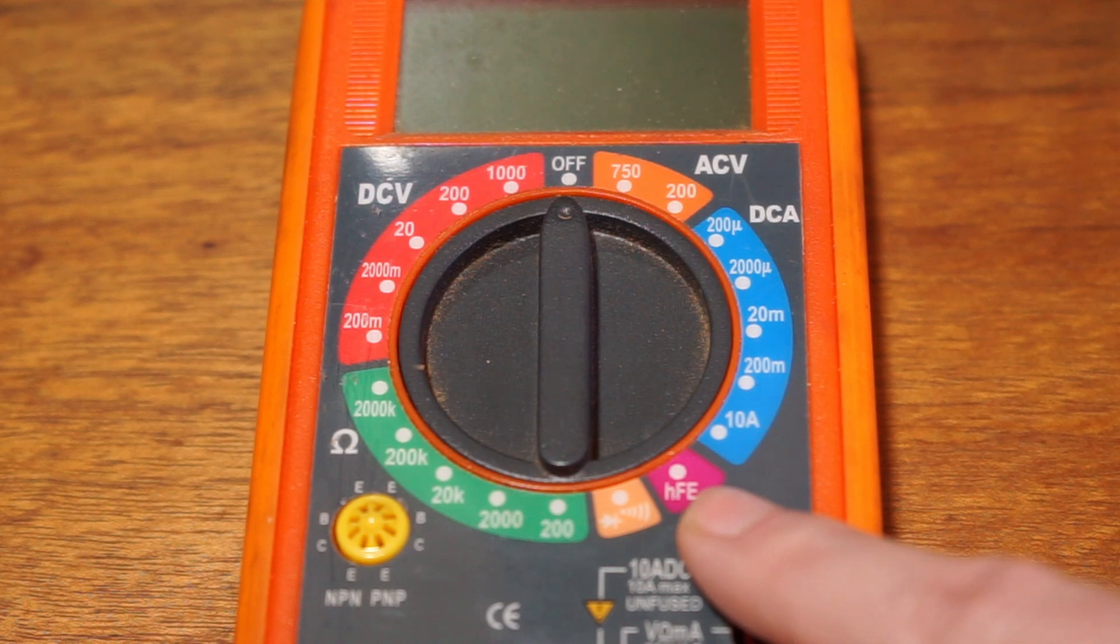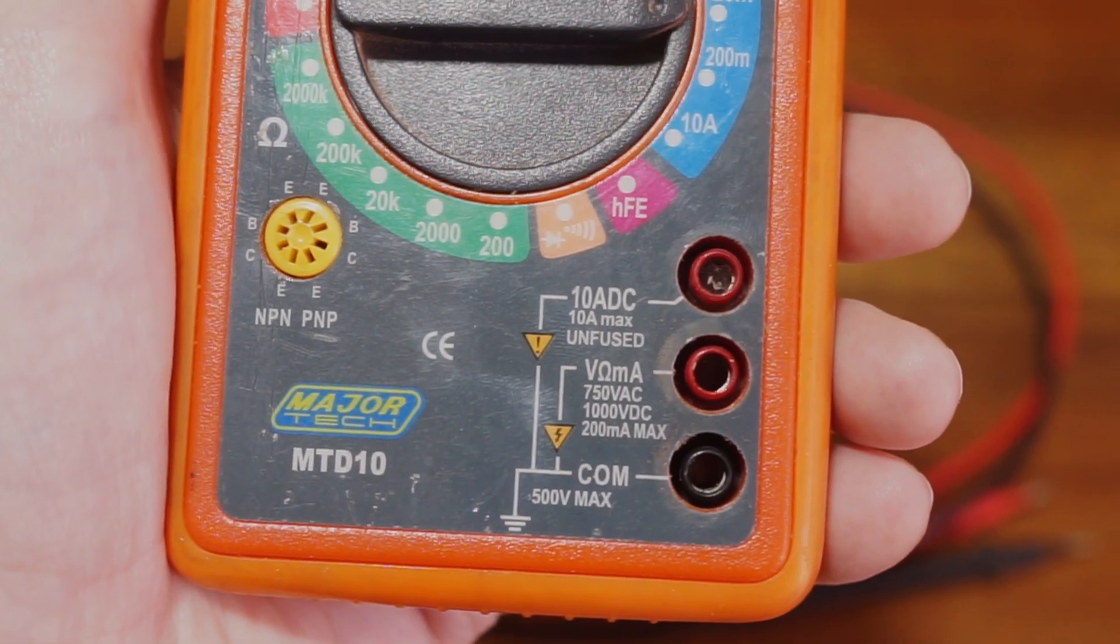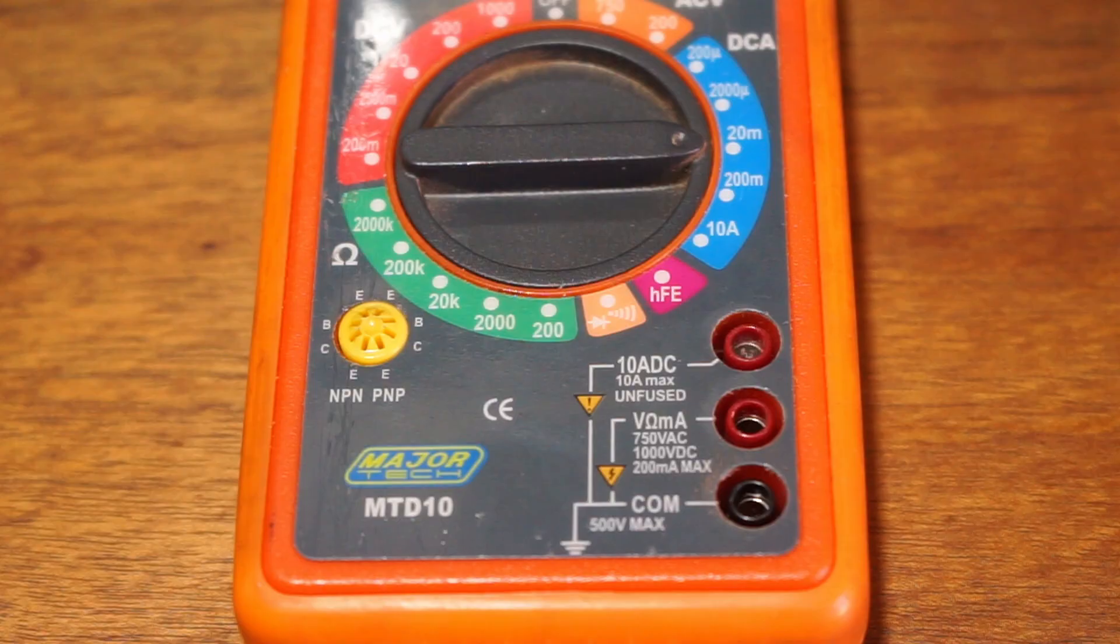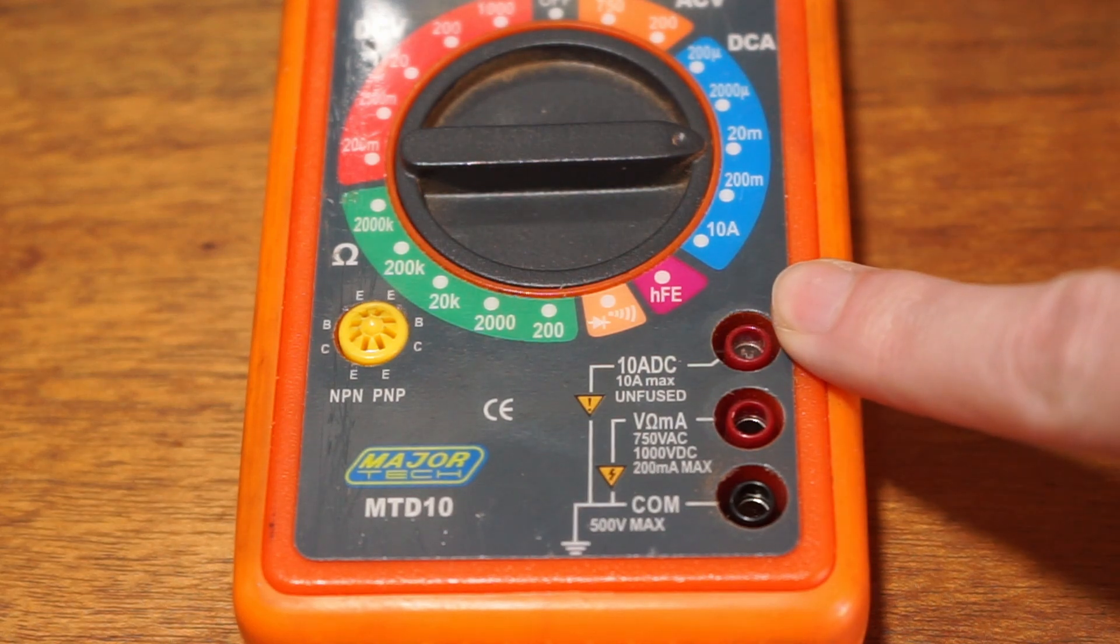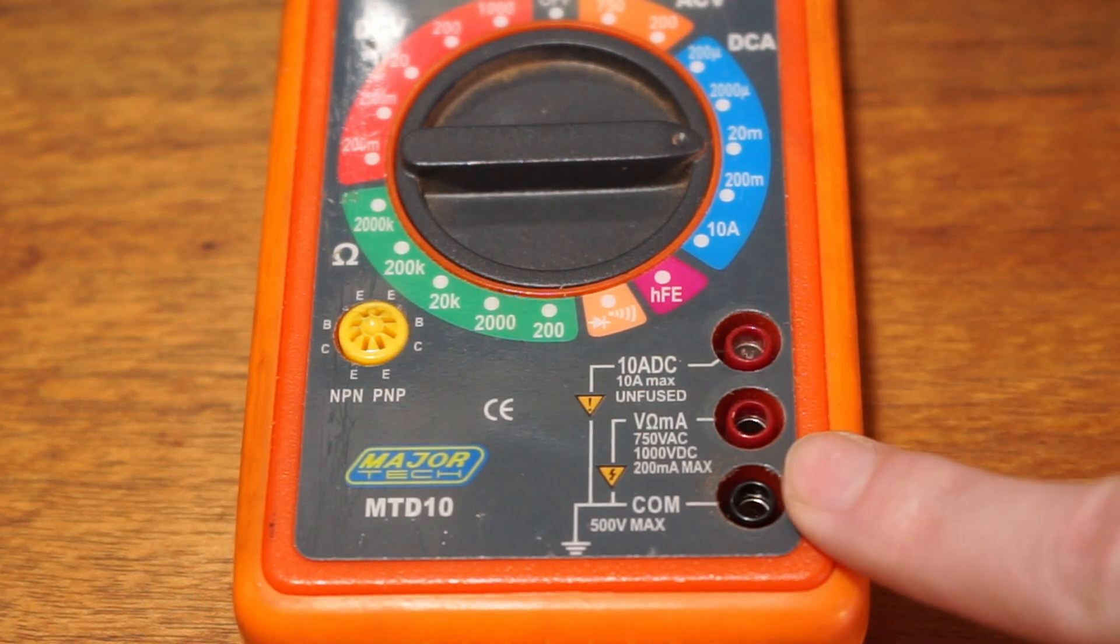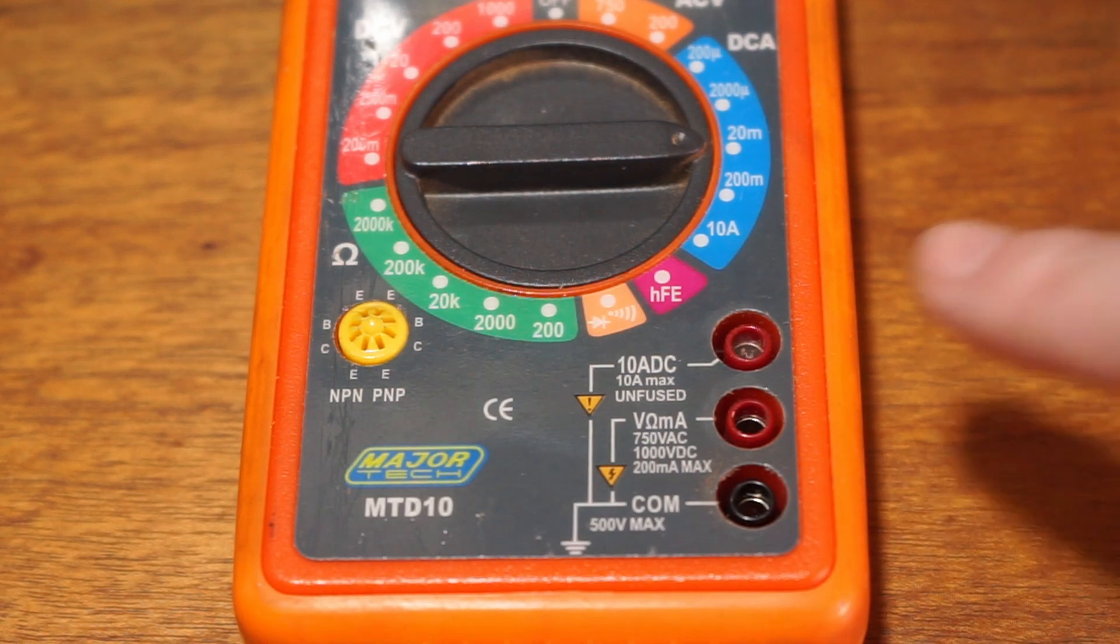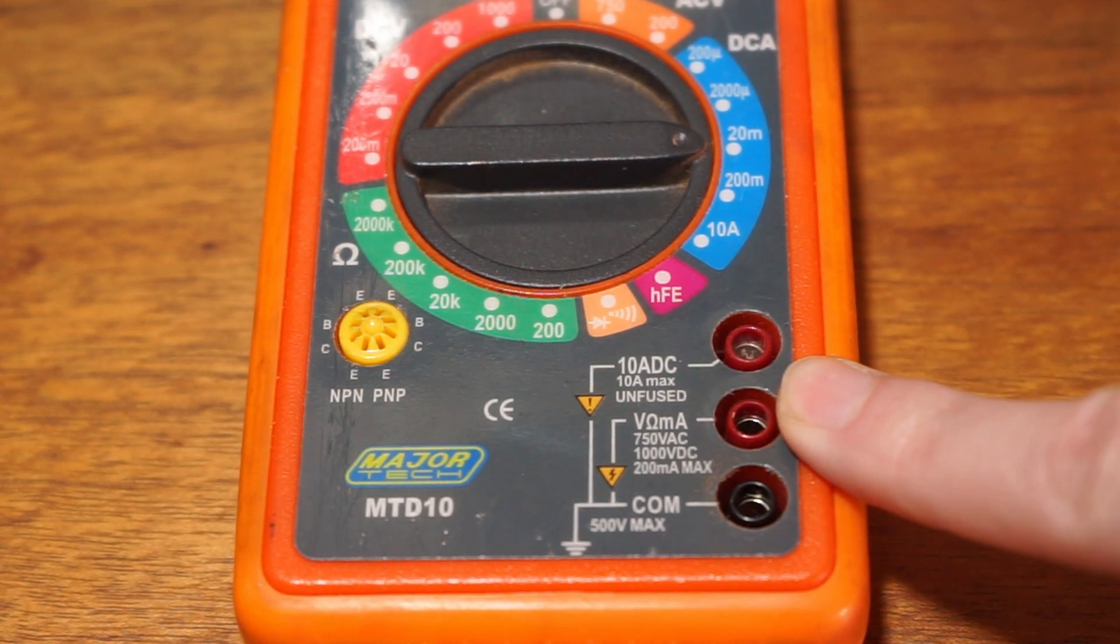Common emitter. This specific multimeter has three input sockets or jack inputs: 10A DC, a red socket for 10A measurement; COM, black socket for negative lead or for the negative pole; Volts and Amps, a red socket used for testing voltage, current, and resistance.